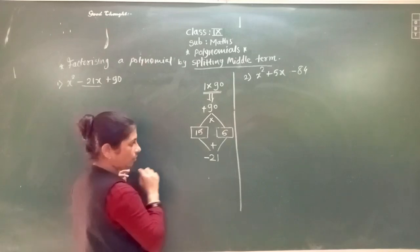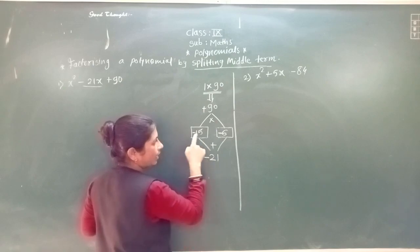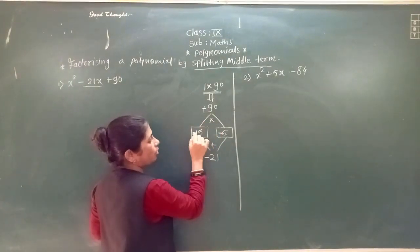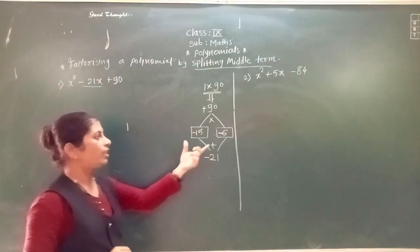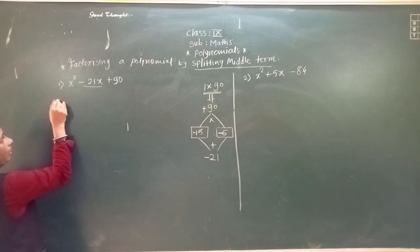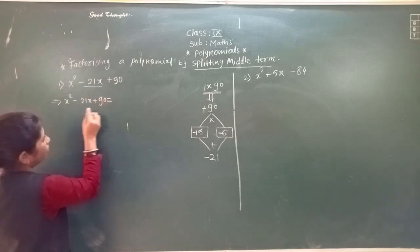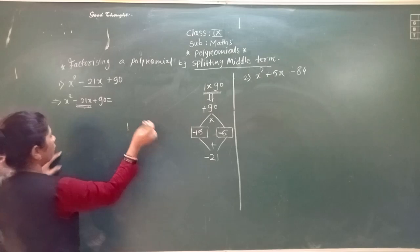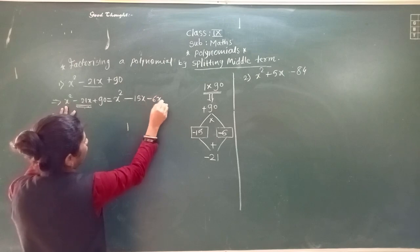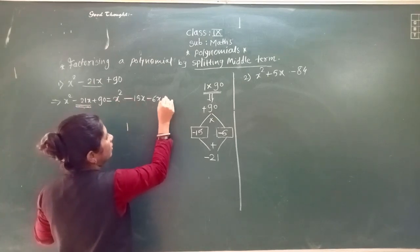Now we have to put the sign: minus, minus. The sum of these 2 numbers will be 21 and a negative sign for both numbers, so the same sign will be there. Addition of these 2 numbers is minus 21 and multiplication of two negative numbers is always positive. So here we have minus 15 and minus 6.